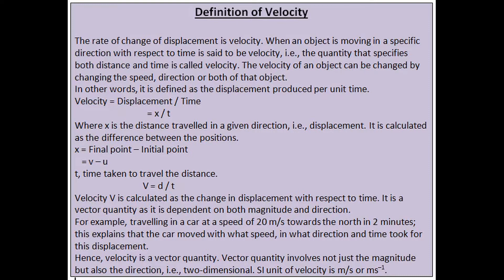In other words, velocity is defined as the displacement produced per unit time: velocity = displacement / time = x/t, where x is the distance traveled in a given direction, i.e., displacement. It is calculated as the difference between positions: x = final point − initial point. Time taken to travel the distance: v = d/t.